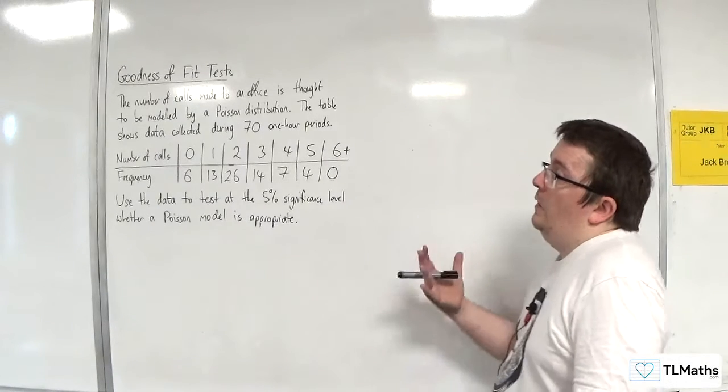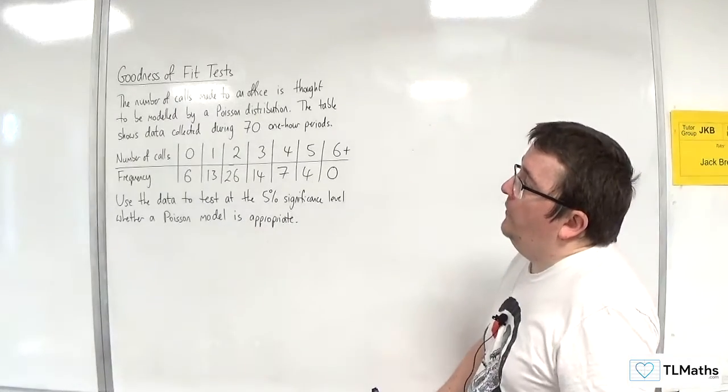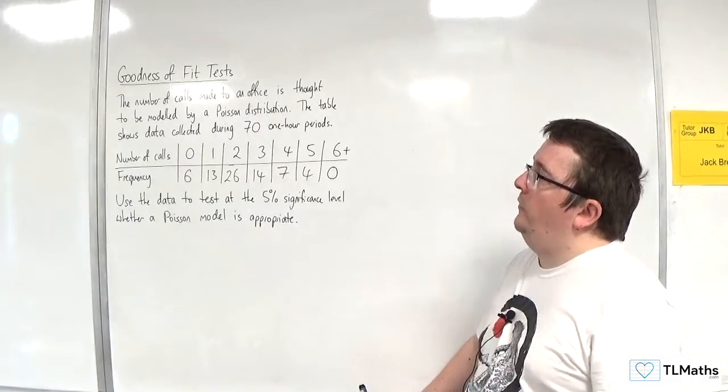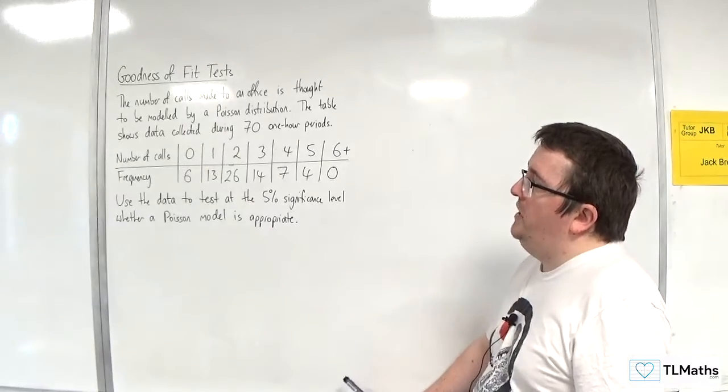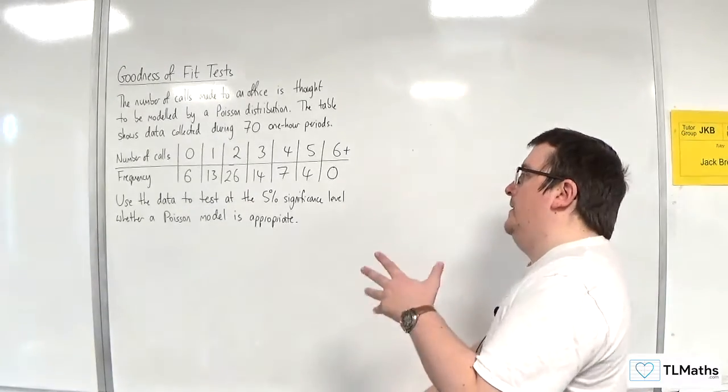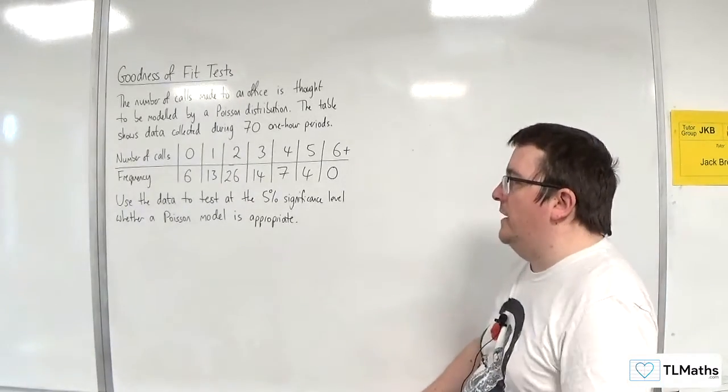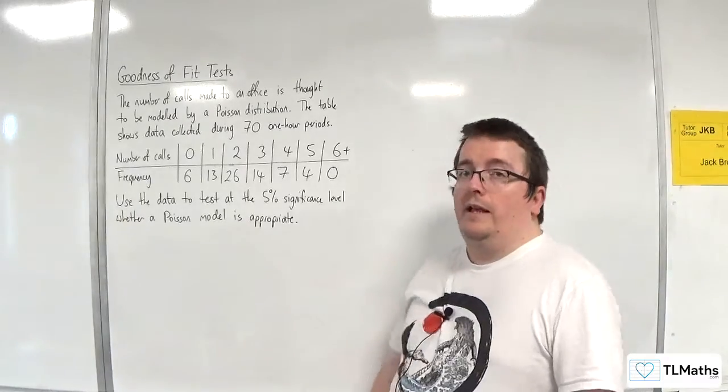In this video, we've got the number of calls made to an office is thought to be modelled by a Poisson distribution. The table shows data collected during 71 one-hour periods. Use the data to test at the 5% significance level whether a Poisson model is appropriate.